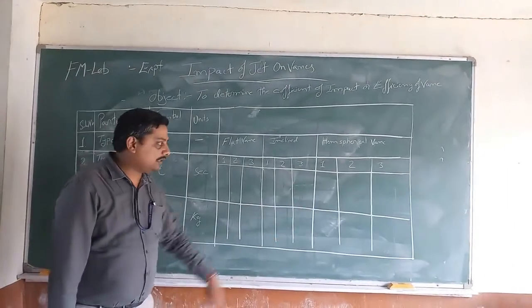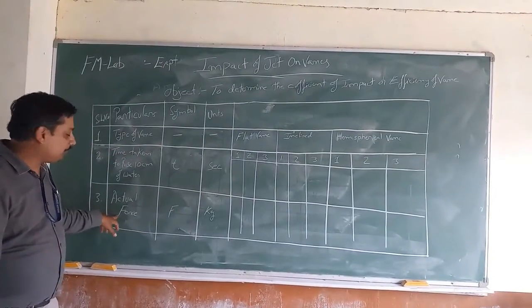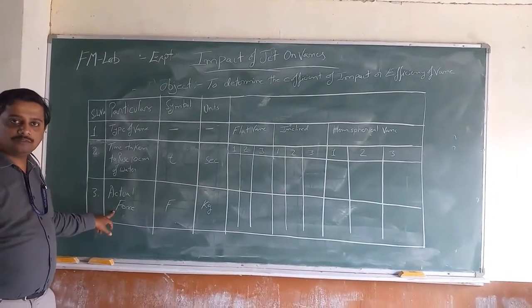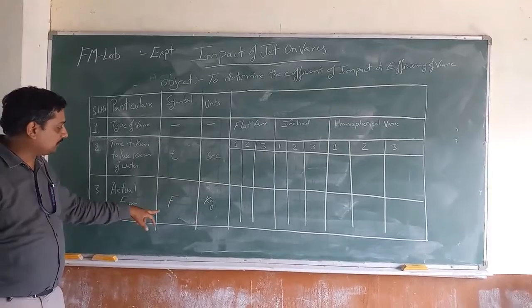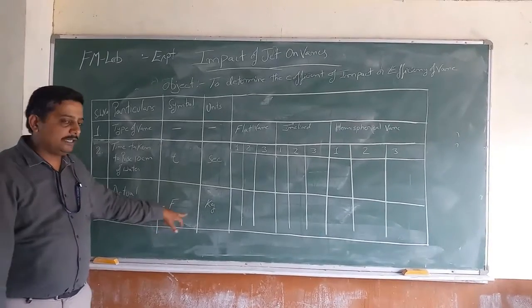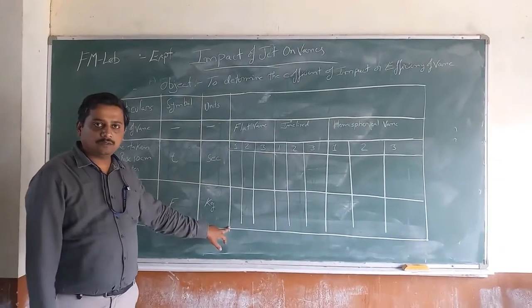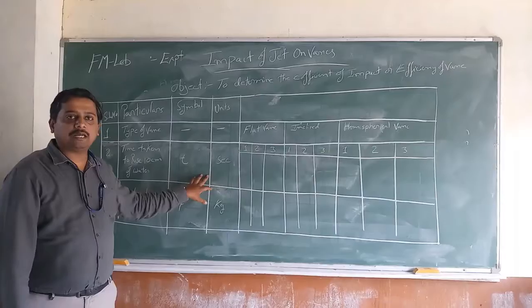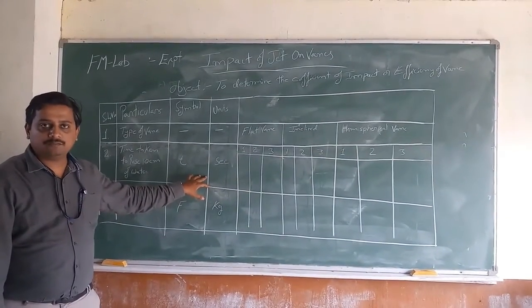You can take a maximum of 3 readings. You also need to measure the actual force using the force measuring device set up on the instrument, recorded in kg. This is the observation tabular column for the experiment.